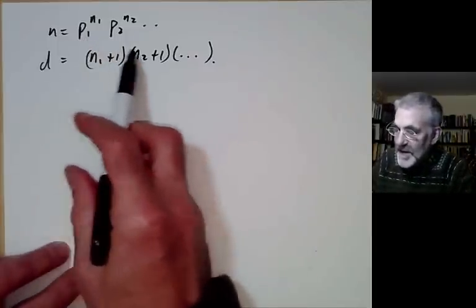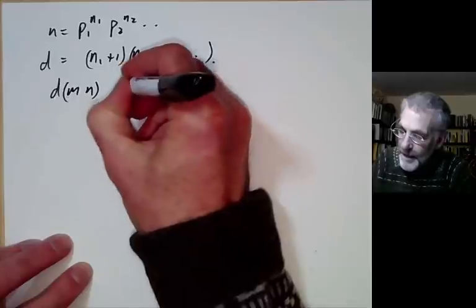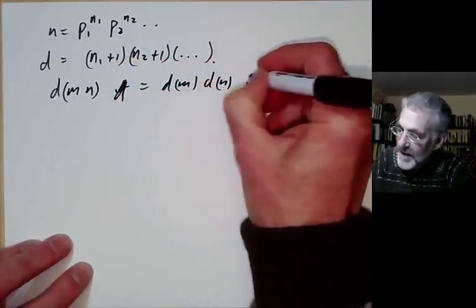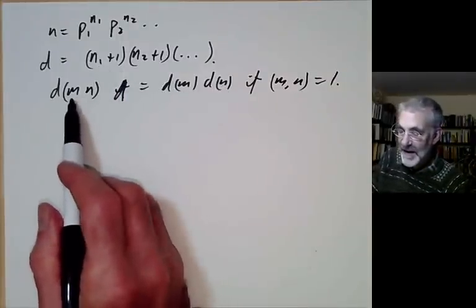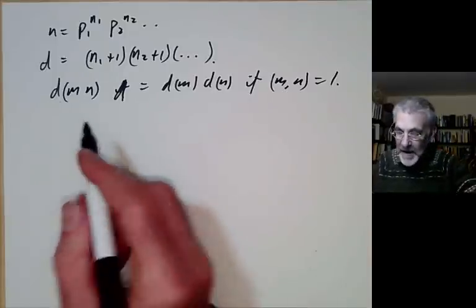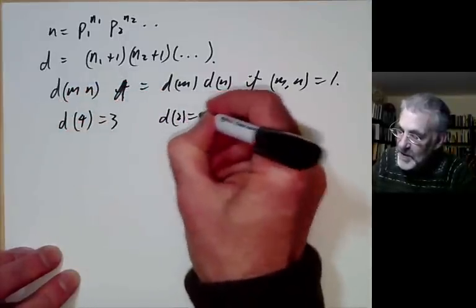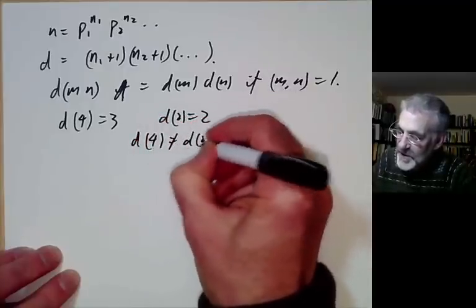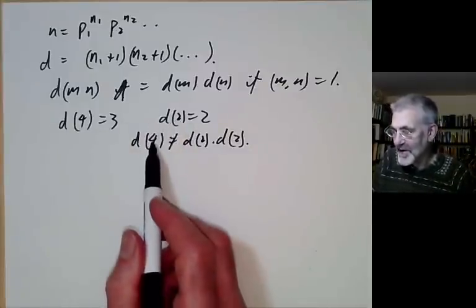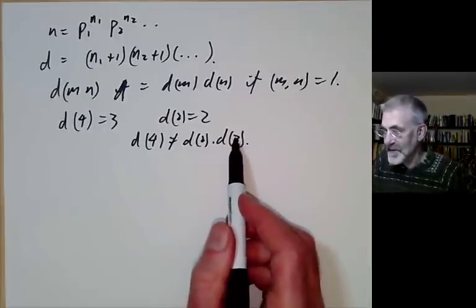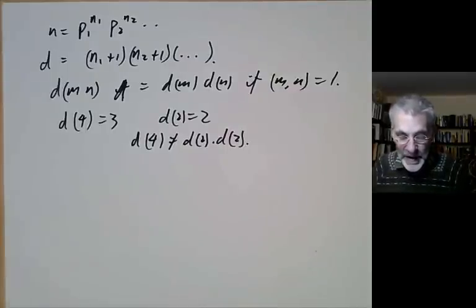We can do the same for any integer. If n = p₁^n₁ × p₂^n₂ × ···, then d(n) = (n₁+1)(n₂+1)···. This immediately shows that the number of divisors is multiplicative: d(mn) = d(m)d(n) if m and n are coprime. If they are not coprime, this fails — for example, d(4) = 3, but d(2) × d(2) = 4. So the divisor function is multiplicative but not strictly multiplicative.